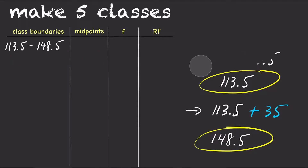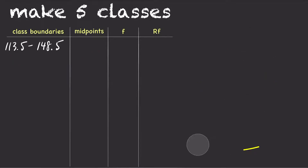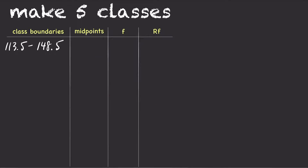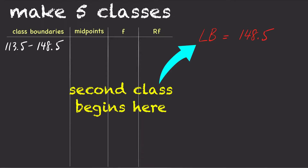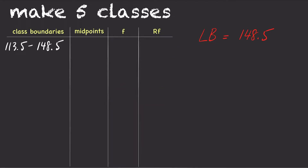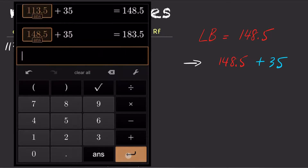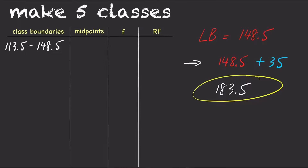For the second class, the lower boundary begins where the first class ended. So in this case, the lower boundary for the second class is 148.5. Add the lower boundary by the class width, which is 35. So 148.5 plus 35 equals 183.5. This is our second class upper boundary.